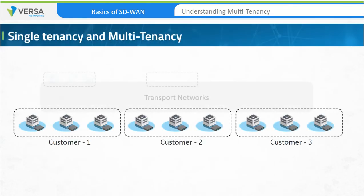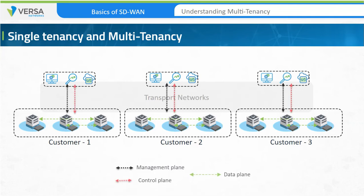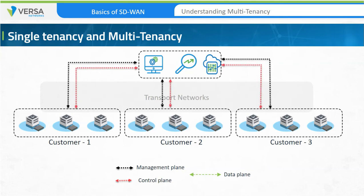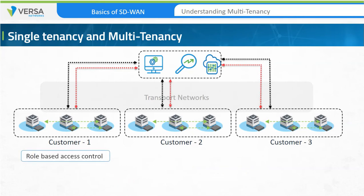In a single-tenant environment, dedicated resources are provided to each customer, each department, or each tenant. In a multi-tenant environment, network resources are shared among multiple customers, departments, or tenants, but their information is kept separate and isolated by the networking devices. Role-based access control is used to ensure that resources available to one group are not available to other groups.